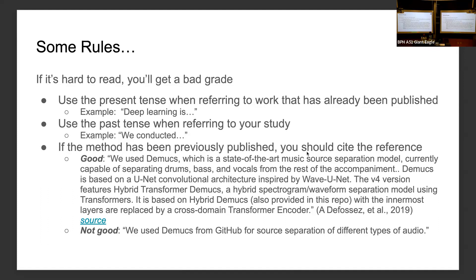Whether you are using some previously published work or previous models, cite it. But don't just mention it in one line saying you used something from a GitHub source — add a couple more lines of explanation. You don't need to explain every single model in a literature survey, but if you are using a particular model in your work, make sure you include good enough details about that paper. Your paper should be technically self-contained.